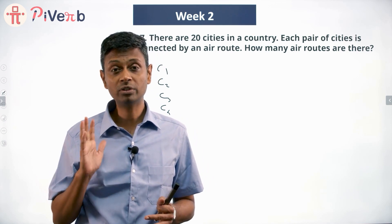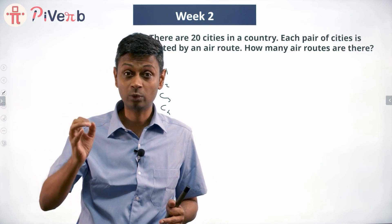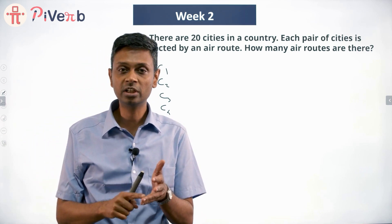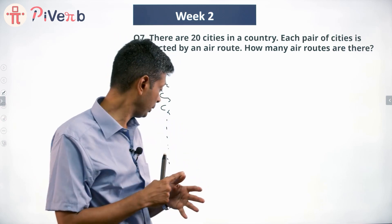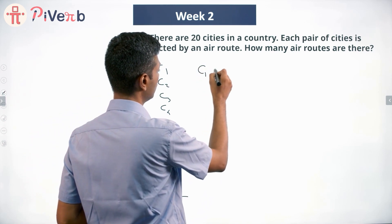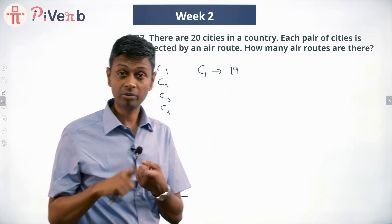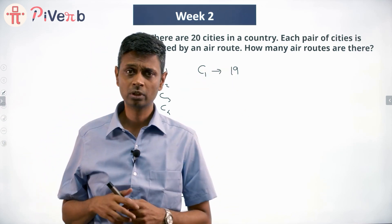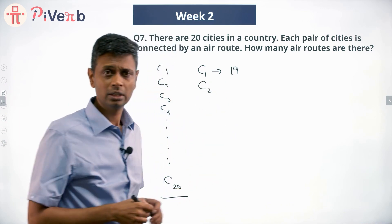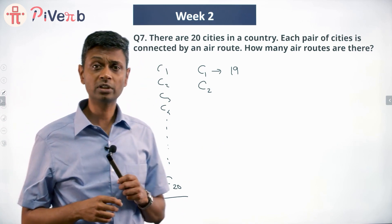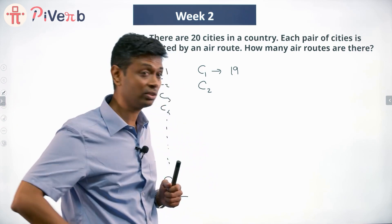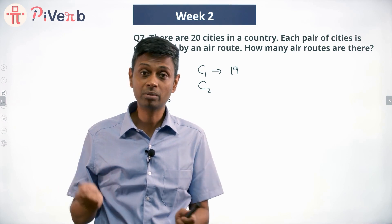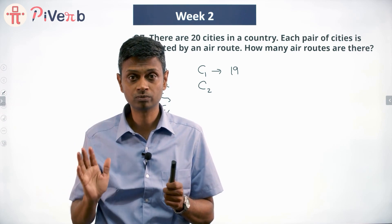Anytime you have these 'how many' questions, you need a plan, an approach, a method for counting everything. So I'll write everything starting from C1: C1-C2, C1-C3, C1-C4, C1-C5, C1-C6, all the way till C1-C20. From C1 we have 19 routes. Then from C2: C2-C3, C2-C4, C2-C5 — I'll count all of those. But C2-C1 I won't count, because it's already been counted. It's like saying there's a route from Bombay to Chennai — I can't count Bombay-Chennai and Chennai-Bombay as separate routes.